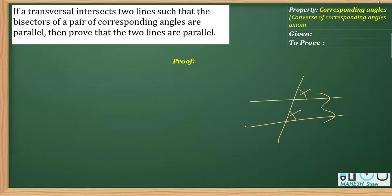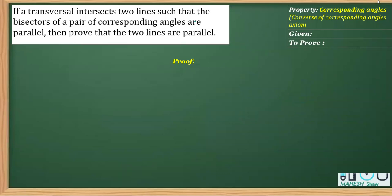The lines which intersect two lines are called a transversal. Now, when I read the question, it says that a transversal intersects two lines such that the bisectors of their corresponding angles are parallel.